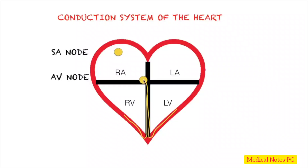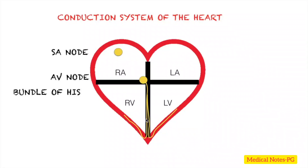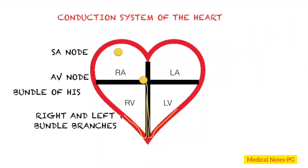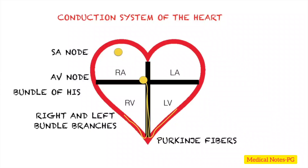From the AV node, the impulse goes to a single structure called the Bundle of His. From the Bundle of His, the cells bifurcate into two separate branches — one to the left and one to the right — called the left and right bundle branches. From the bundle branches, extending within the apex of the heart, they are called the Purkinje fibers.